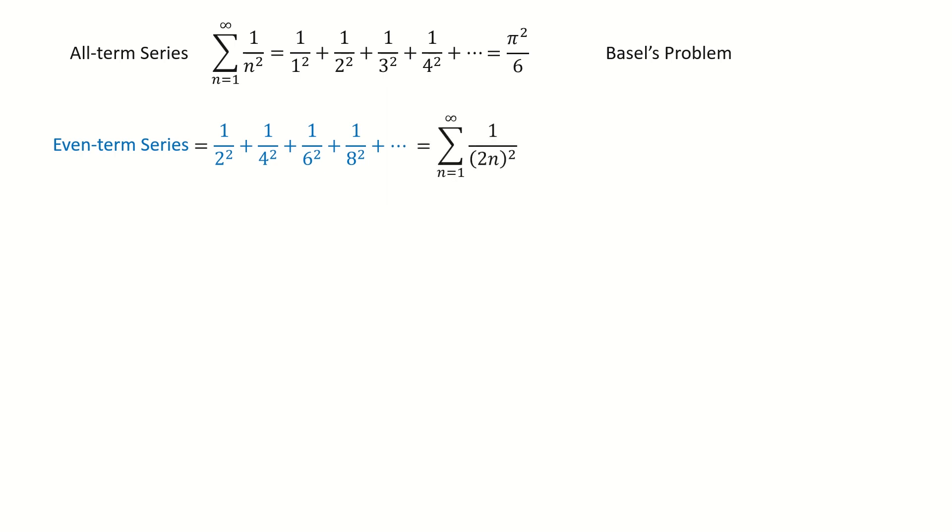So we write it into a compact form. Then we expand the power for the denominator, and we take the factor 1 over 4 out of the series. Now we plug in the result. So we are done for the even term series.